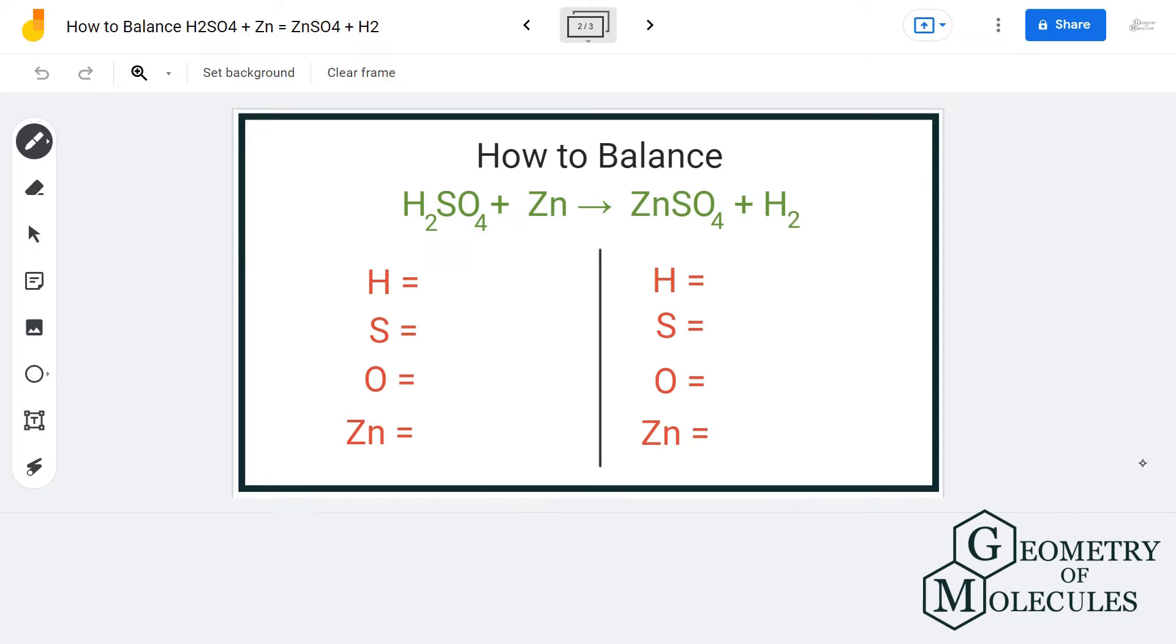On the reactant side we have two hydrogen atoms, one sulfur atom, four oxygen atoms, and one zinc atom. On the product side we have two hydrogen atoms, one sulfur atom, four oxygen atoms, and one zinc atom.